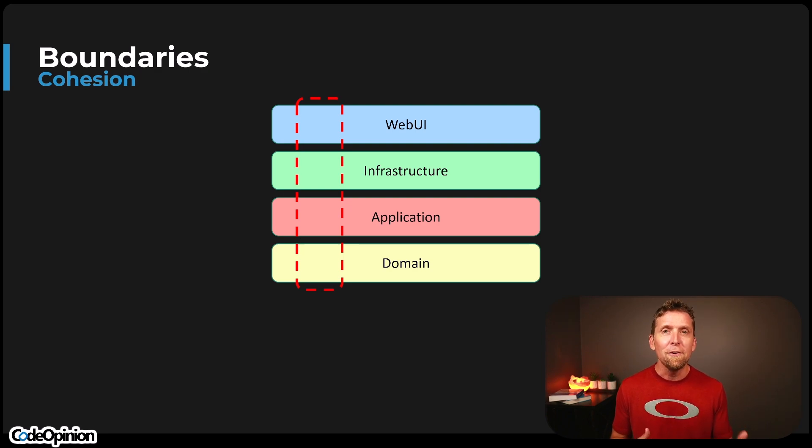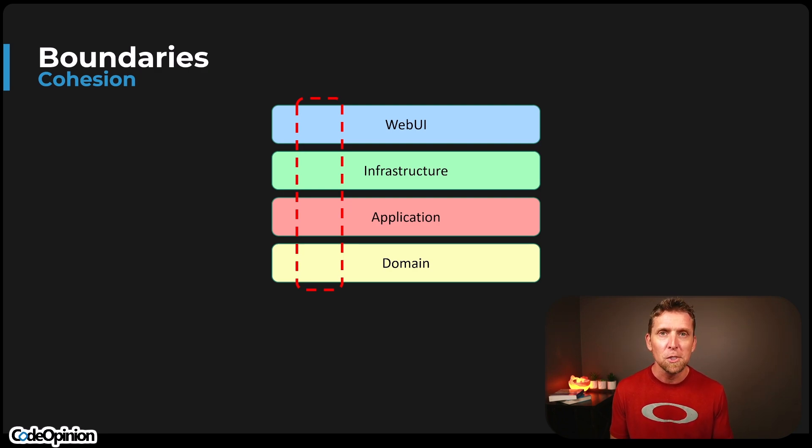There are going to be different vertical slices within your system that relate to a user but have different concerns. You don't need one concept to only exist in one place. For example, say you order a product online and want it shipped to your house. There are a whole lot of business processes and capabilities going on there — there's the actual act of ordering.